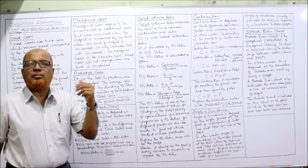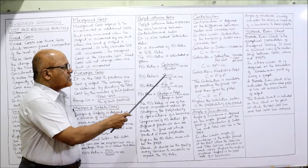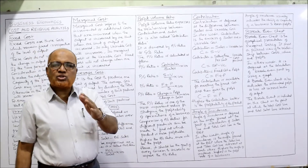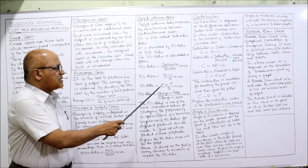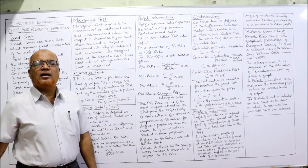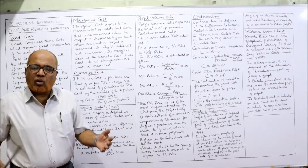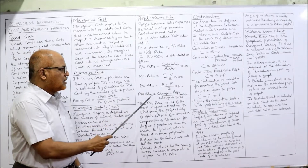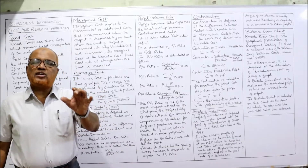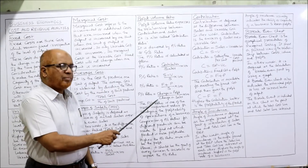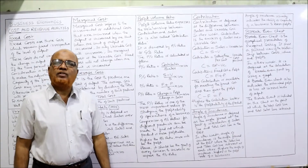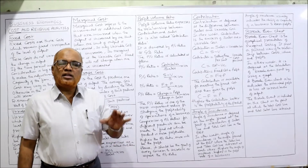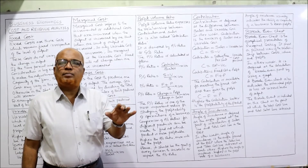Additional formulas for PV ratio include (F + P) / sales × 100, or change in profit / change in sales × 100. Any of these formulas will give the same answer. The PV ratio is one of the most important ratios for studying profitability and is normally applied to find out the profitability of a product.